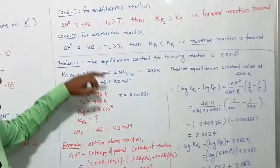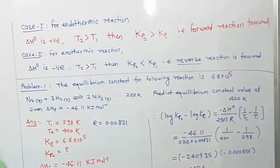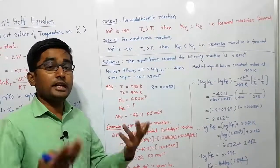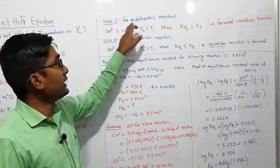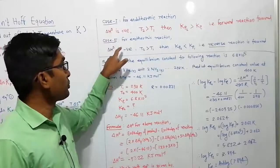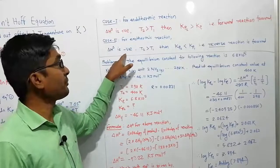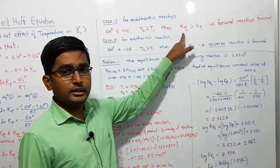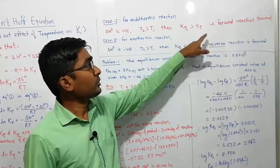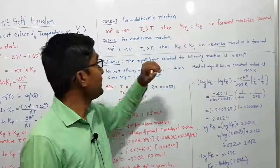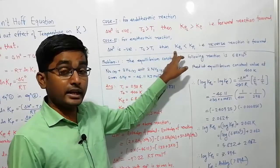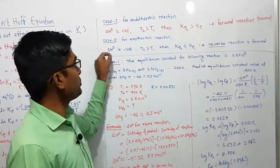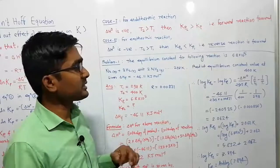There are two cases: case 1 for endothermic reactions and case 2 for exothermic reactions. In an endothermic reaction, heat is absorbed and ΔH⁰ is positive; in an exothermic reaction, heat is evolved and ΔH⁰ is negative. For endothermic reactions, the equilibrium constant at higher temperature is greater than Kp1, so the forward reaction is favored. For exothermic reactions, the equilibrium constant at higher temperature is smaller, so the reverse reaction is favored.